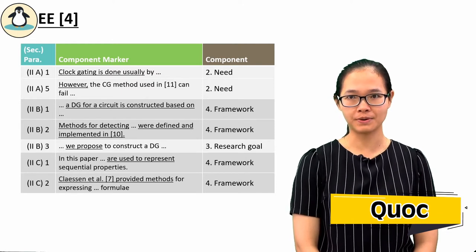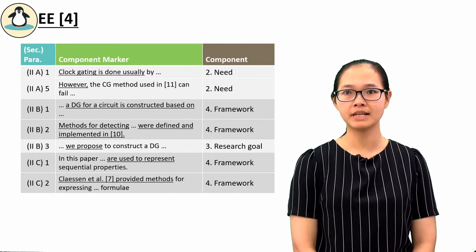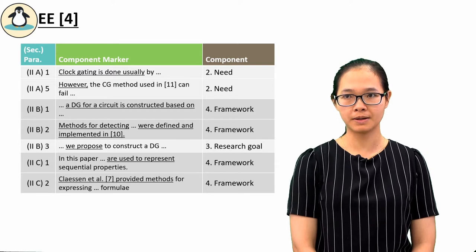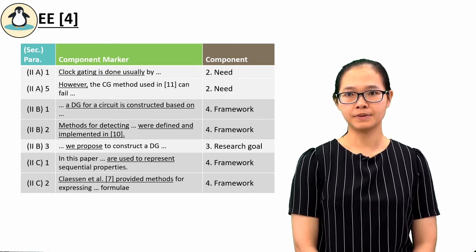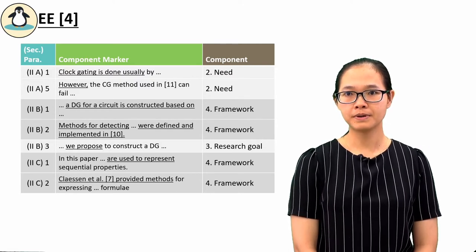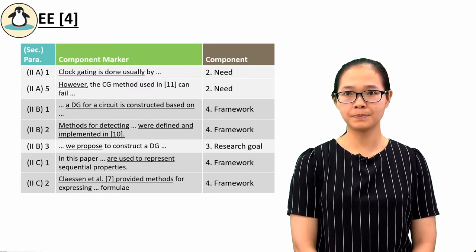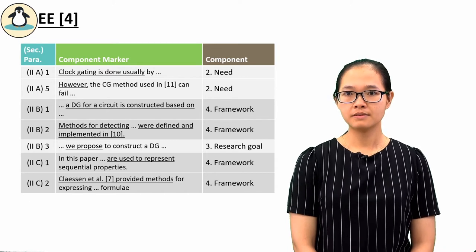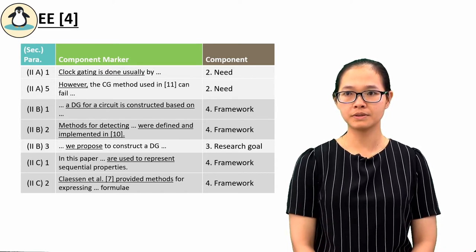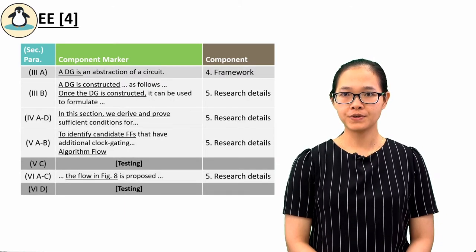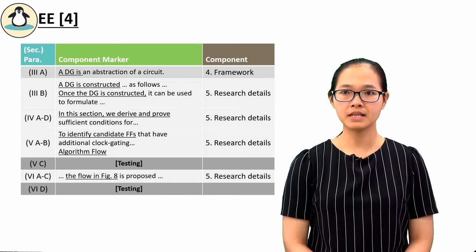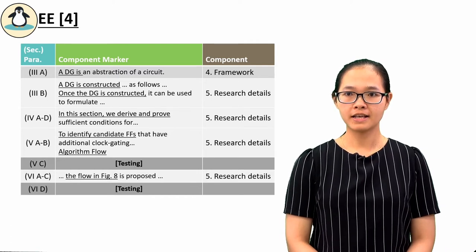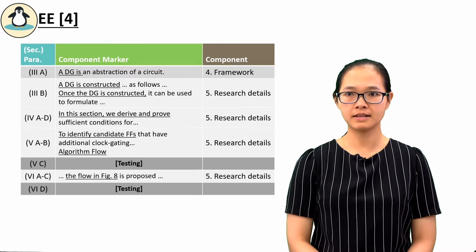For the electrical engineering article table, the components are listed as: needs (in subsection 2a, paragraphs 1–5), framework (in subsection 2b, paragraphs 1–2, and subsection 2c), and research goal (subsection 2b mentions 'we propose something'). From subsection 3b to subsection 6d the focus is on research details. Subsections 5c and 6d will talk about the testing division, which we will focus on in the next lesson.